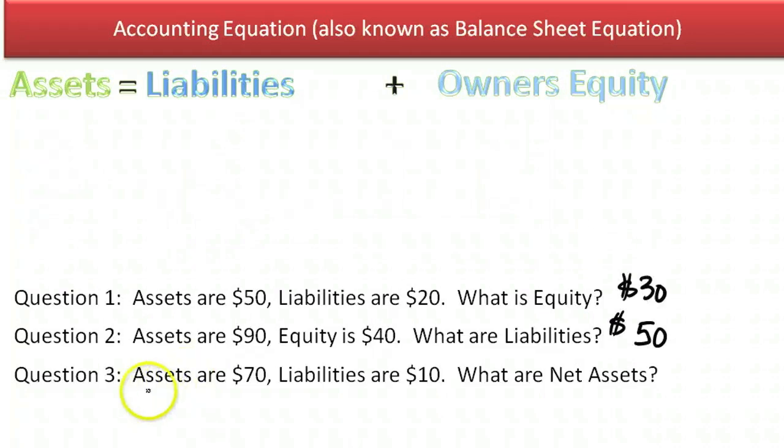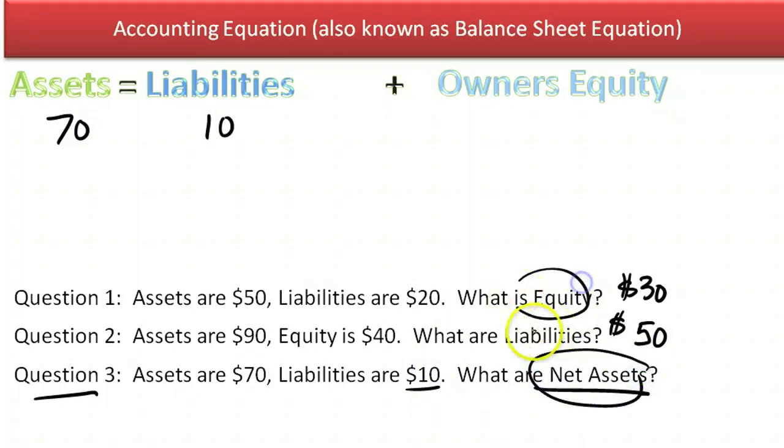Let's do the next problem. So on this final question three, in this case, they've given us the assets of $70. They've given us the liabilities of $10. And then they say, well, what are net assets? Well, if you didn't know that net assets and equity mean the same thing, this could be confusing.